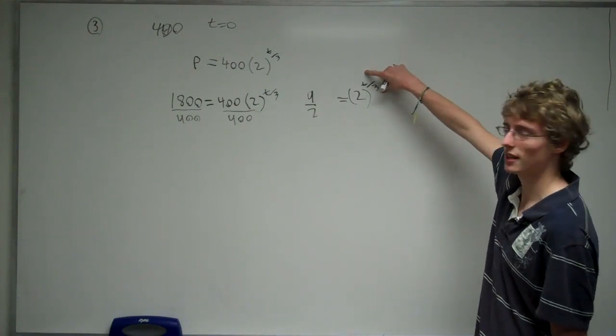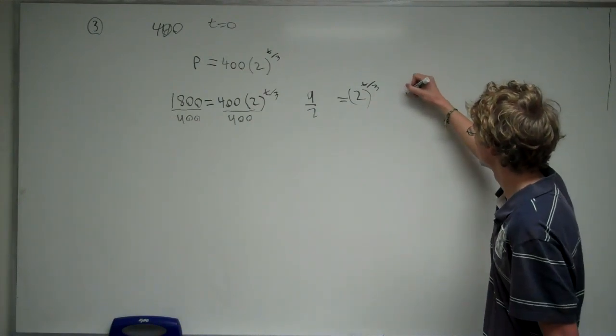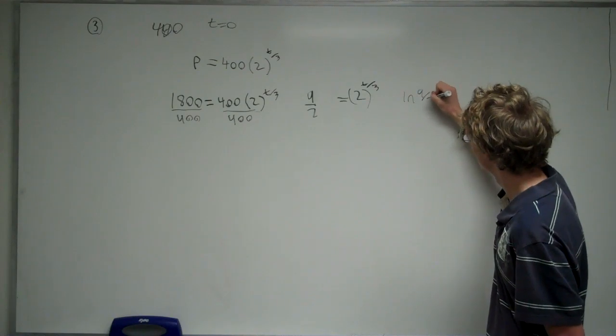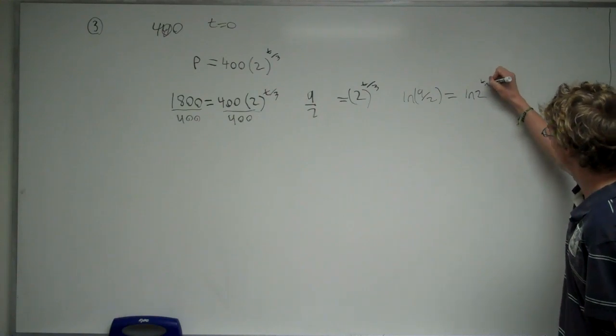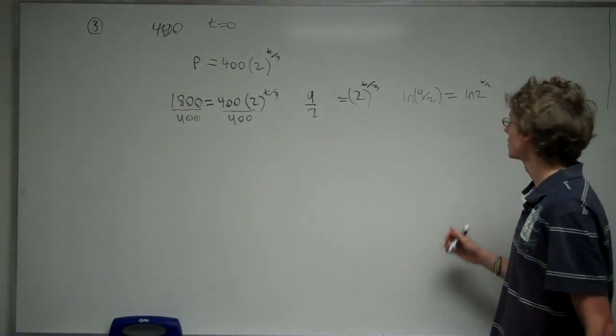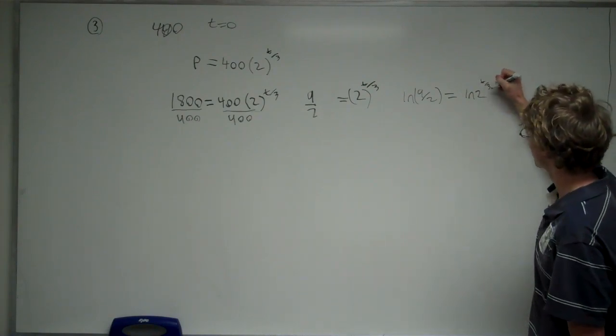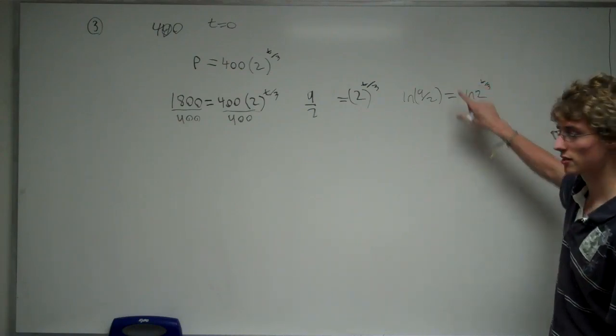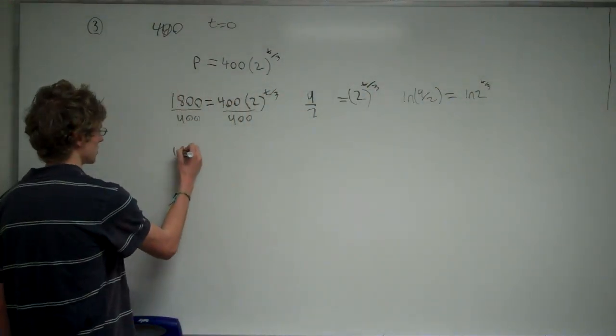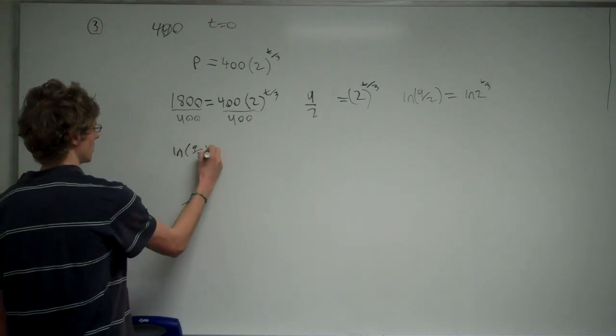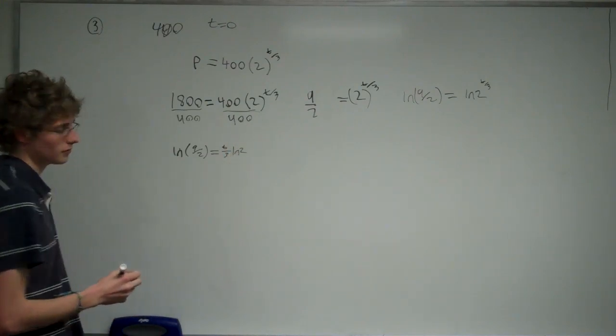Now, this is in the exponent, and we want to try to get this out of the exponent to solve for t. So to do that, we want to take the ln of both sides. The reason we take the ln is because now we can take this exponent, t divided by 3, and we can bring it out to the front of ln of 2.